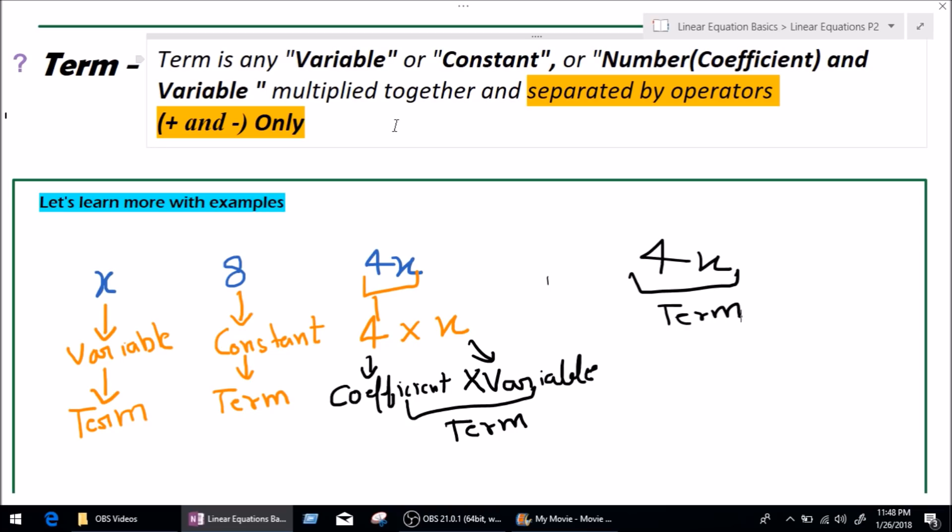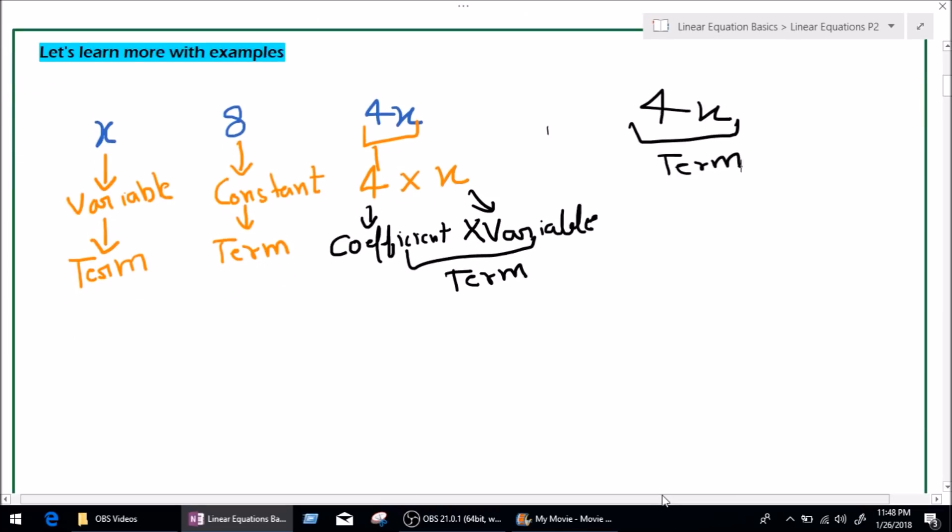It means that two terms can be separated only by plus and minus. Now, let's break down 4x. If we break down 4x, we get 4 multiply x. Multiplication cannot, keep this in your mind please, it cannot separate a term.